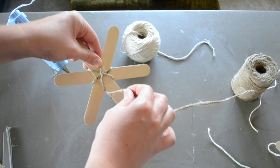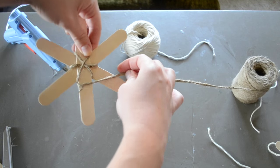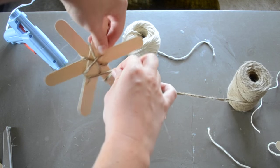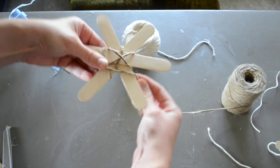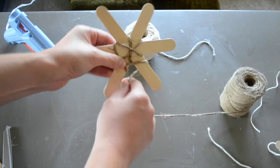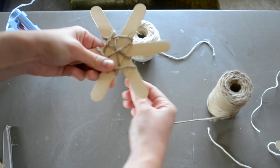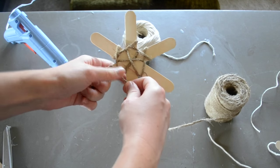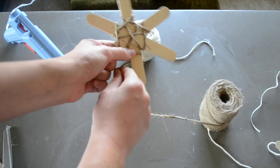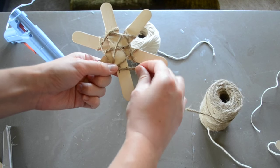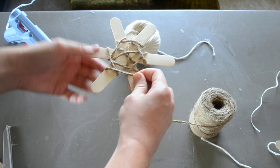Once you're done with that you're going to come up and wrap around the next one. You're moving in a circle, pulling it nice and tight to keep that jute in a kind of square pattern.